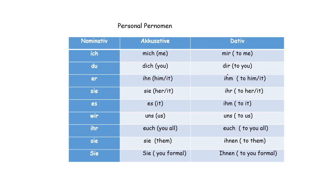For personal pronouns: ich – mich – mir; du – dich – dir; er – ihn – ihm; sie – sie – ihr; es – es – ihm; wir – uns – uns; ihr – euch – euch; sie – sie – ihnen; Sie – Sie – Ihnen for formal you.